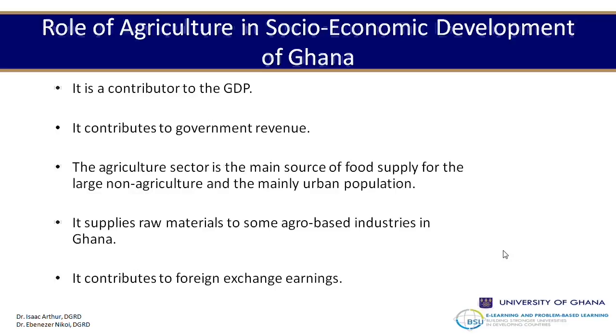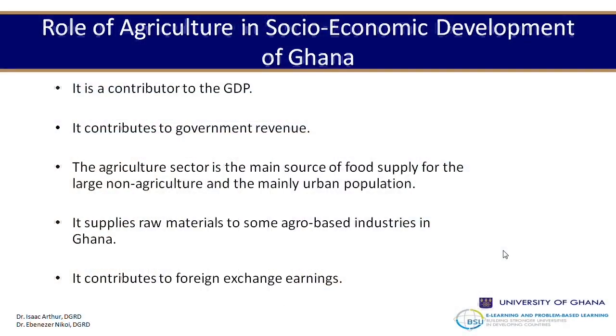Agriculture employs the highest proportion of the economically active people, particularly in rural areas. Agriculture also contributes significantly to our gross domestic product, though it cannot be compared to other sectors like services. Over the years it has been declining — from 2009 up to 2014 it declined quite significantly. But all the same, it makes a major contribution to our GDP. It also contributes to the government's revenue collection and serves as a main source of food for the growing population.